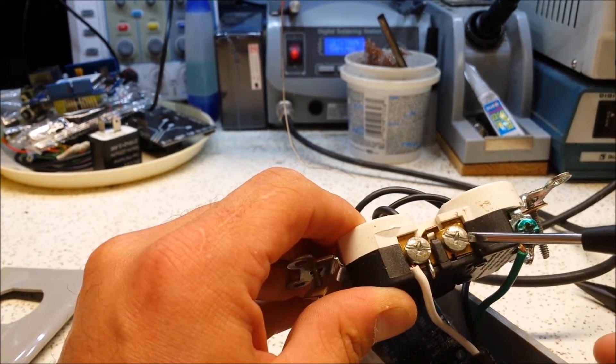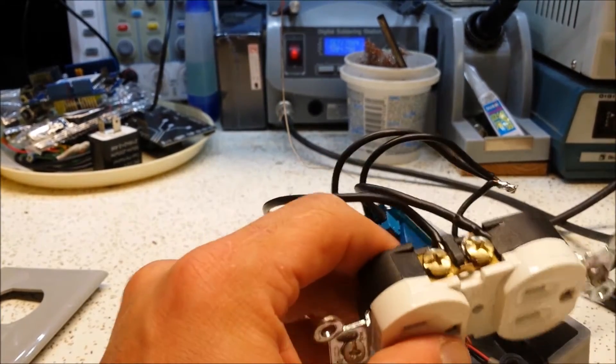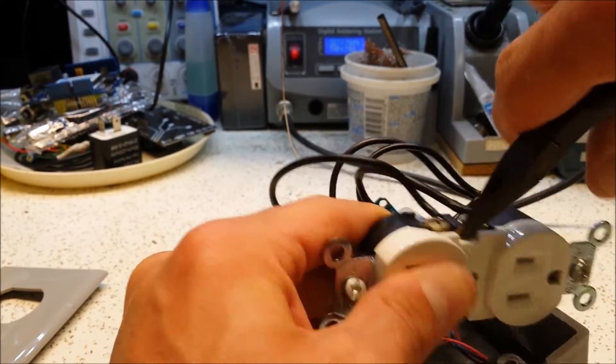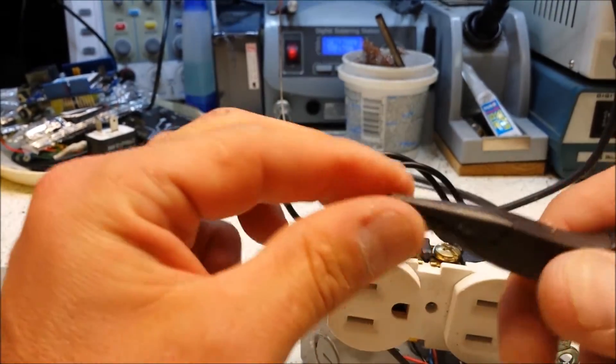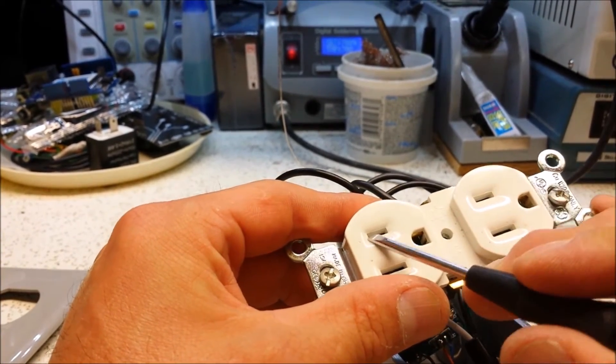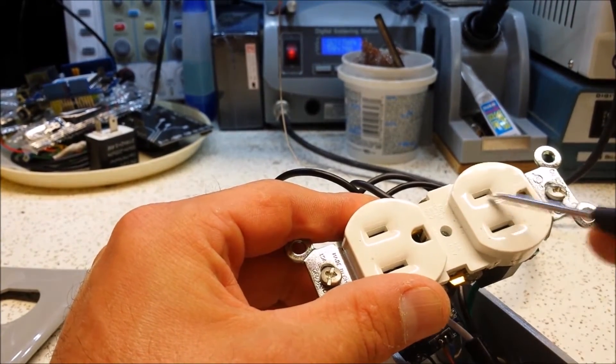So because I want them to be isolated, I have to break that little ear. So you just take any pair of little pliers and work it back and forth. And you can see the little ear is now removed so that essentially this hot side plug and this hot side plug are isolated.